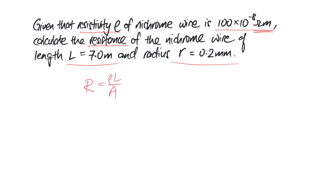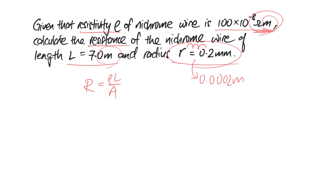One thing to take note is that for such questions, you have to be very mindful with the units. The radius given to you is in mm, so first, you need to change it to meters because the resistivity is already in meters — you have to be consistent. The length is already in meters, so 0.2 mm changed to meters: small to big, you divide by 1000, so it's 0.0002 meters.